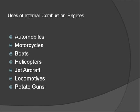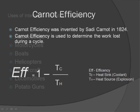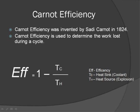Here is a list of some devices that use the internal combustion engine. Carnot efficiency was invented by Sadi Carnot in 1824, and it is used to determine the work loss during a cycle. Efficiency can be calculated by using the equation 1 minus heat loss divided by the heat gain.